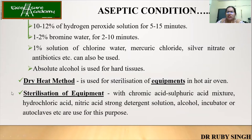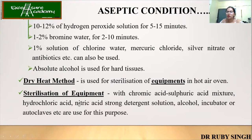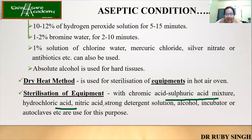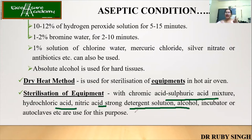Then the dry heat method. As discussed in the previous lecture, you can use a hot air oven, which is specifically used for drying equipment. For sterilizing large equipment that cannot be put inside the autoclave, we use chromic acid, sulfuric acid mixture or HCl, nitric acid, or strong detergent solution, alcohol, incubator, autoclave, etc. In my practical days, we were using 70% alcohol to sterilize any hard substance or equipment.